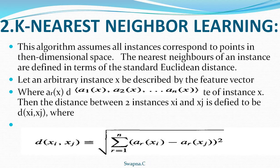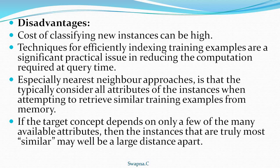In the next class, we are going to learn about K-nearest neighbor learning, which is the first approach to achieve instance-based learning. In this video, we covered the basic introduction, the different approaches to achieve instance-based learning, and the advantages and disadvantages. We will meet in the next video. Thank you.